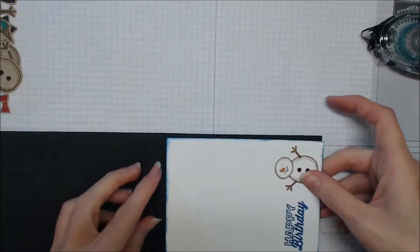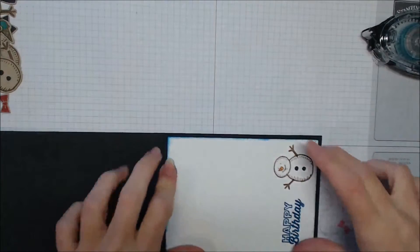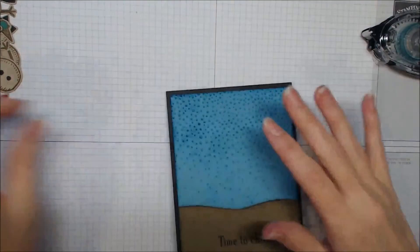Now I want to go ahead and sponge the edges of this inside panel with Pacific Point just to give it a nice look and kind of coordinate with the front of the card a little bit more.